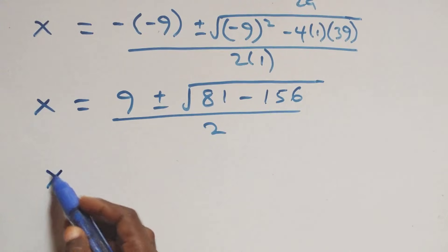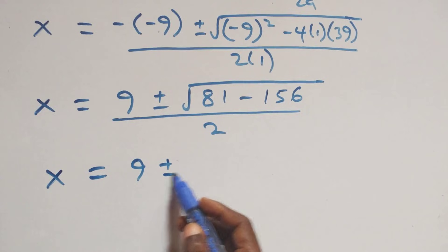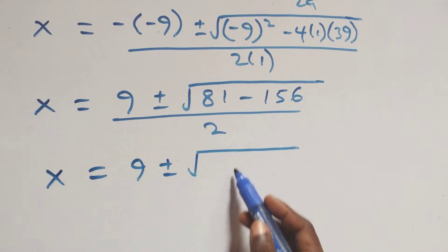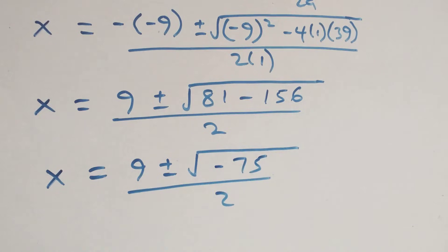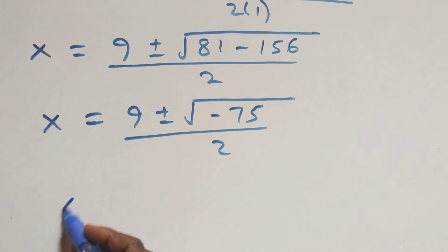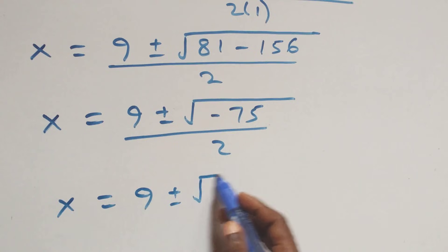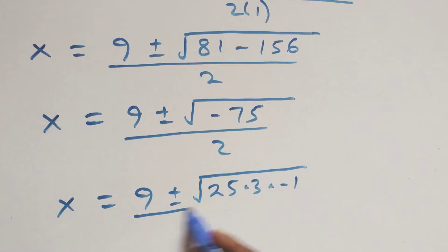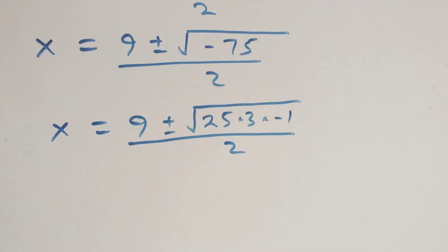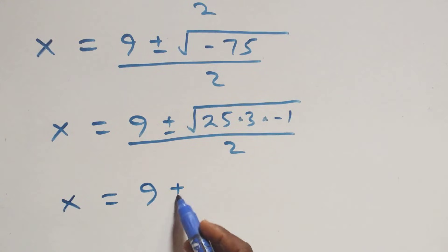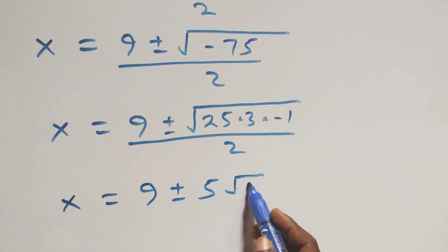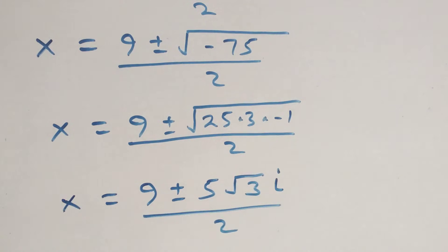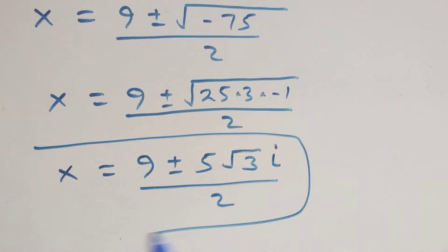This gives x equals 9 plus or minus square root of minus 75 over 2. We can write this as x equals 9 plus or minus square root of 25 times 3 times minus 1, over 2. Separating the root, root of 25 is 5, so x equals 9 plus or minus 5 times root 3 times i, over 2. Therefore we have two complex solutions from Case 1.